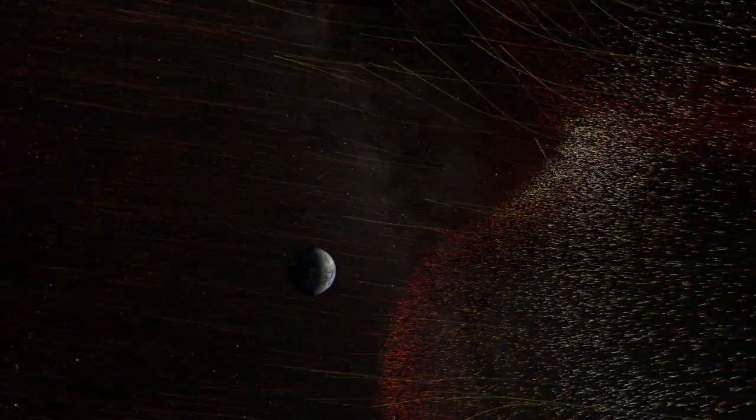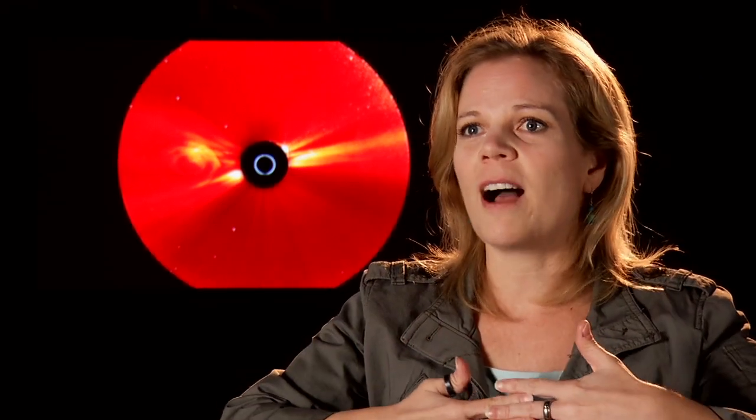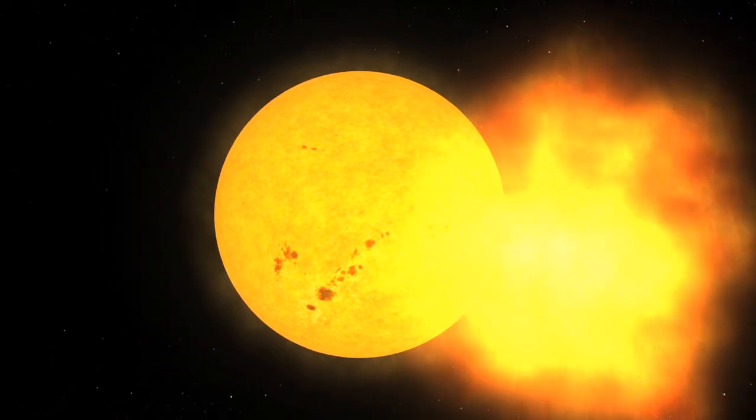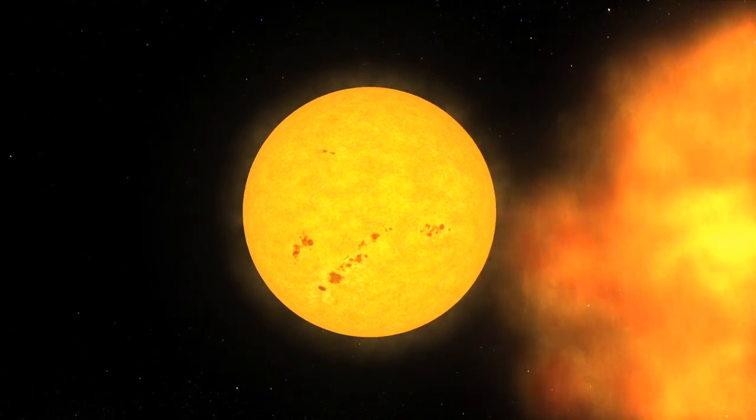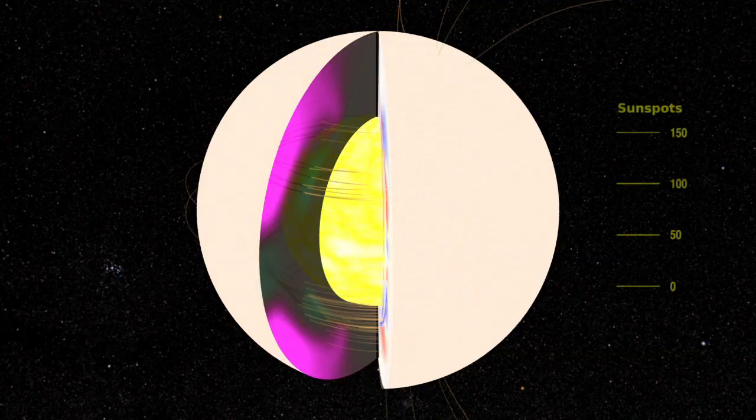Solar energetic particles are particles of plasma that are accelerated at the flare site from the energy released in the flare. These particles can be accelerated up to almost 80% of the speed of light. A coronal mass ejection, when traveling so fast, creates a shock that can also create solar energetic particles.